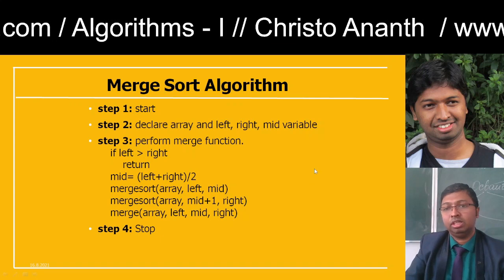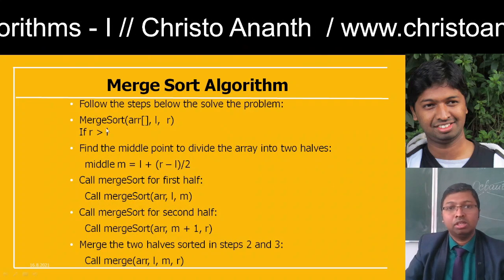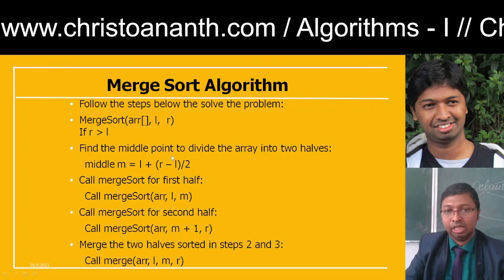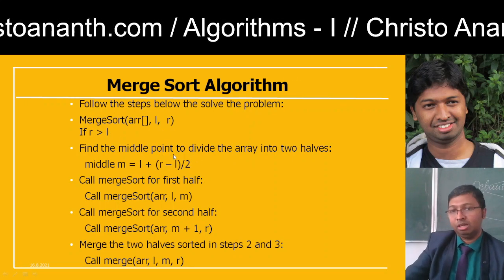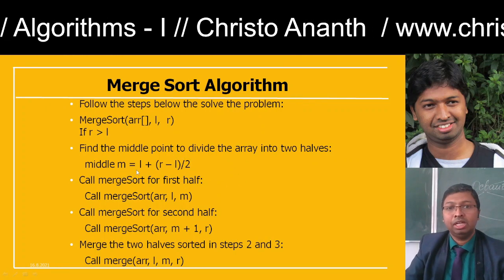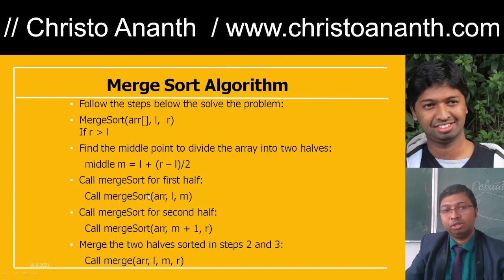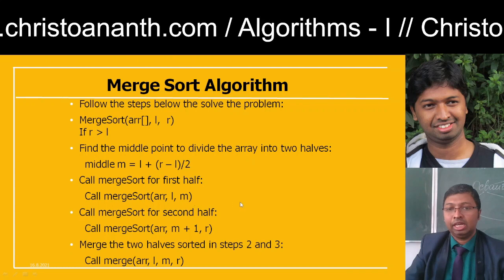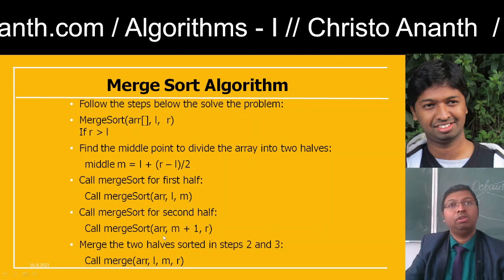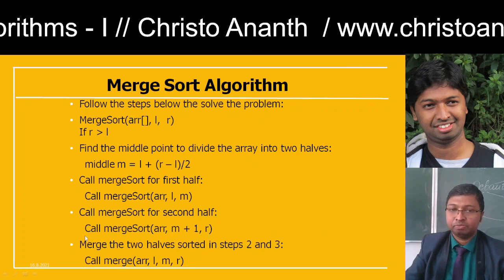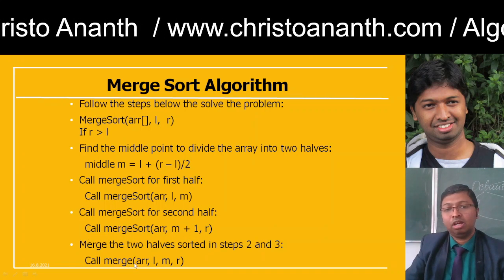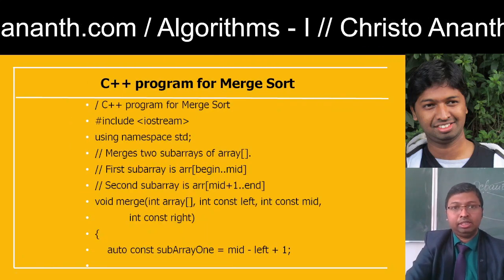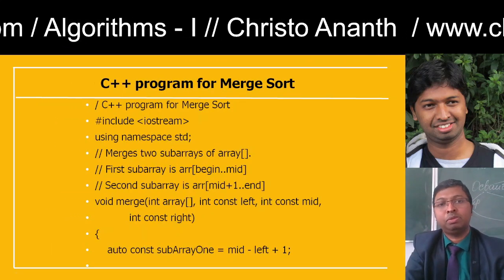The merge sort algorithm: call mergeSort(array, left, mid) and mergeSort(array, mid+1, right), then merge(array, left, mid, right). In the mergeSort function, if R is greater than L, find the midpoint: mid = L + (R − L) / 2. Call mergeSort for the first half: mergeSort(array, L, M), and for the second half: mergeSort(array, M+1, R). Then merge the two halves by calling merge(array, L, M, R).